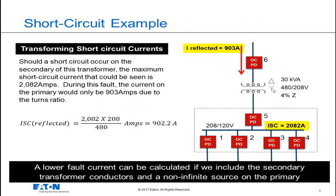Here's another example that addresses the transformation of short circuit currents when the short circuit is on the secondary of the transformer. For this 480 to 208 volt transformer, should a fault occur on the secondary, the maximum short circuit current that could be seen on the secondary is 2082 amps. Using our equation to reflect this current to the primary shows us that the primary current would only be 903 amps.